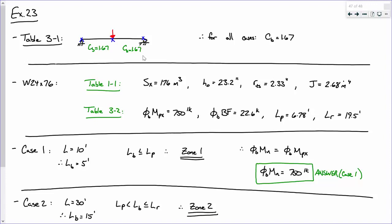Okay. So, for analyzing a W24 by 76, we need some properties. So, we're going to be doing this problem, we're going to be doing quite a bit of work on this problem. So, I've pulled some section properties from table 1.1 from the front of the manual. So, I've got the section modulus, the center-to-center distance between flanges, that's H sub 0.